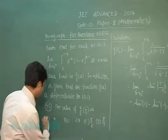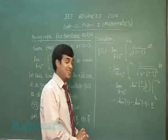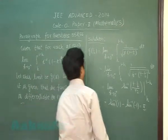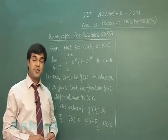That is π/2 minus (-π/2), giving me π. So the correct answer for this question is (a). Let's go for the next question of this paragraph, that is question number 56.